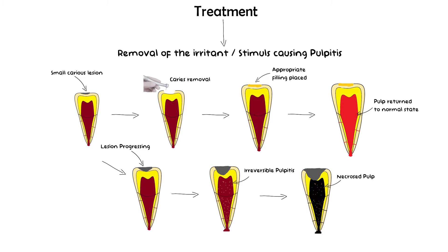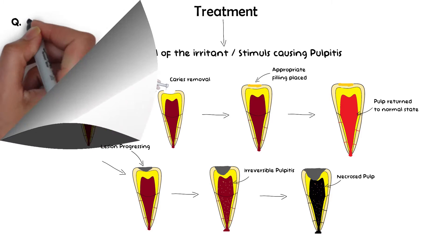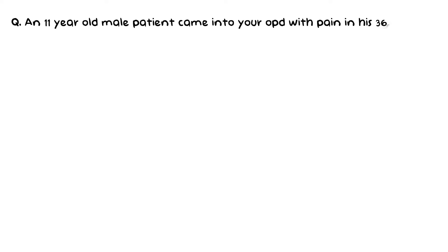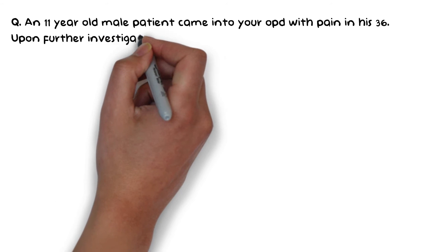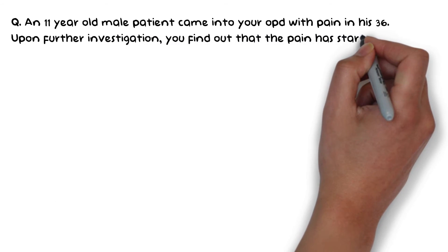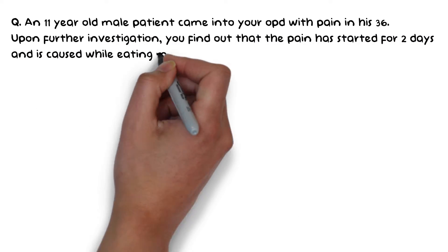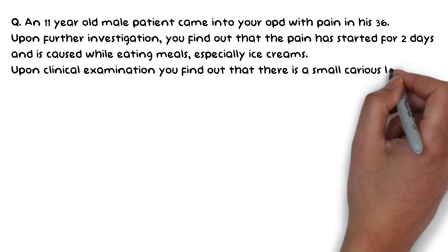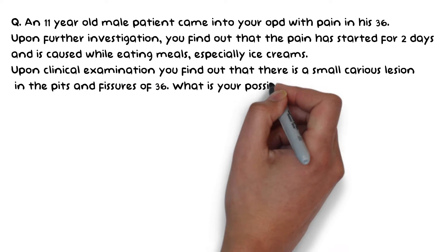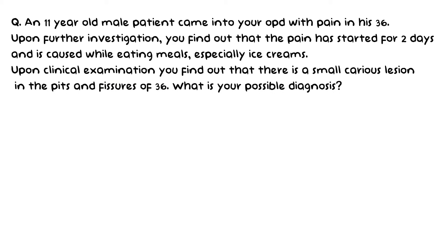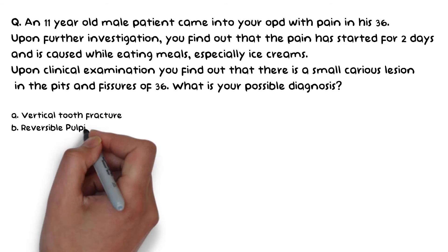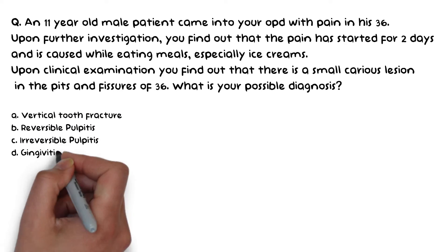Now let's do a basic clinical question related to pulpitis. An 11-year-old male patient came into your OPD with pain in tooth 3-6. In FDI notation, 3-6 means the lower left molar. The pain started 2 days ago and is caused while eating meals, especially ice creams. Clinical examination reveals a small caries lesion in the pits and fissures of 3-6. What is your possible diagnosis? Options are: vertical tooth fracture, reversible pulpitis, irreversible pulpitis, and gingivitis.